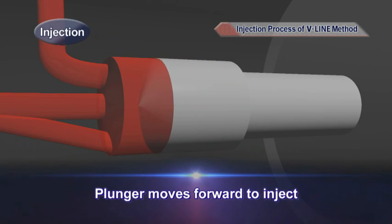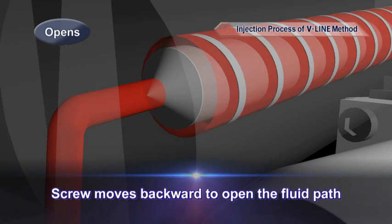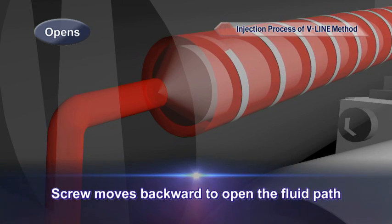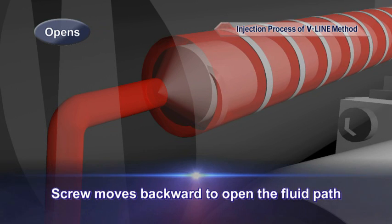Subsequently, the plunger moves forward to inject the resin. After the injection is completed, the screw moves backwards to open the fluid path.